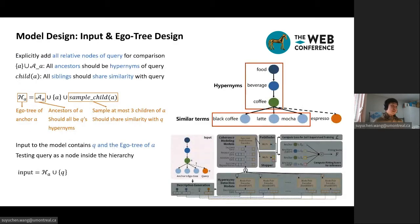Now, let me introduce our model design. In our model, we would like to add all relative nodes with query in the seed taxonomy for explicit comparison. Here, relative nodes have two types. Anchor and all ancestors of anchor should be hypernyms of the query, and the children of anchor would be siblings of the query, so they should share similarity with query. Thus, we designed the Eagle Tree structure containing anchor, the ancestors of anchor, and at most three sampled children of the anchor. The sampling process guarantees abundant comparison while reducing computational cost. The input to the model contains Q and the Eagle Tree of A to test the query as a node inside the expanded taxonomy.